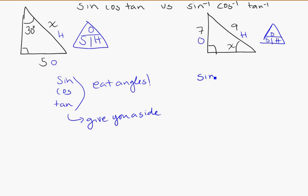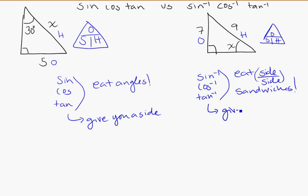On the other side, we've got sin inverse, cos inverse, tan inverse. And these guys need to eat side-side sandwiches. So sin, cos, and tangent eat angles. The inverse functions have to eat a side-side sandwich, and they will give you an angle. That's kind of why they're inverses.